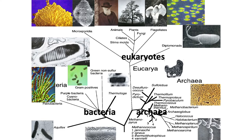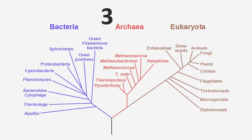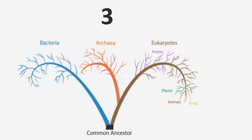Here's another plot, and again there are three domains: eukaryotes, bacteria, and archaea. Notice how they're all separate from each other. Here's another plot — eukaryotes, bacteria, and archaea, all separate. Separate three domains.